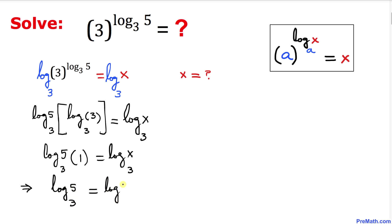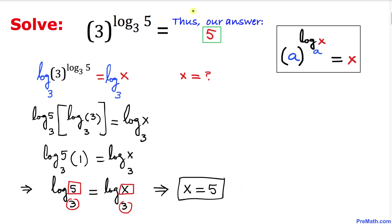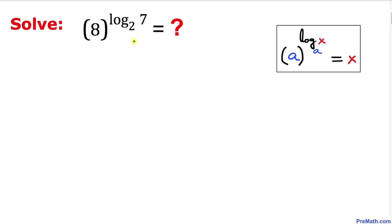Simply we get log of 5 with base 3 equals log of x with base 3. Since everything is the same — base 3 on both sides — that means 5 must equal x. So our x value turns out to be simply 5, and thus our answer is 5.